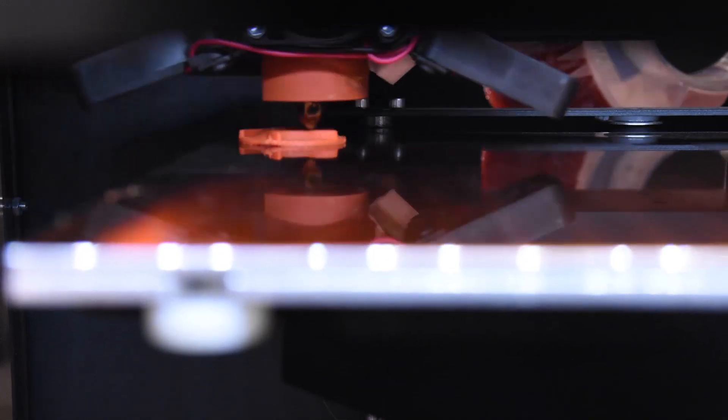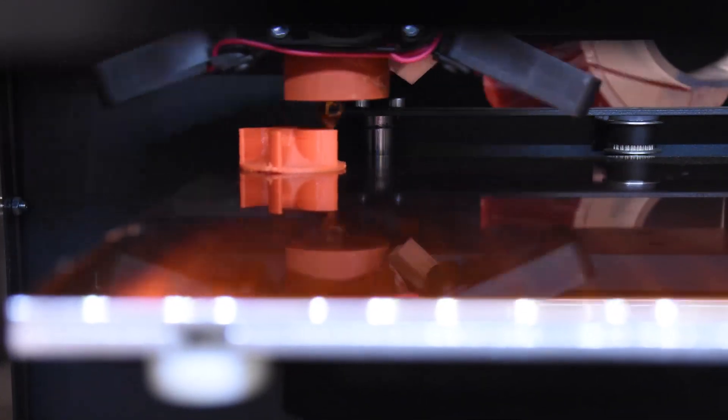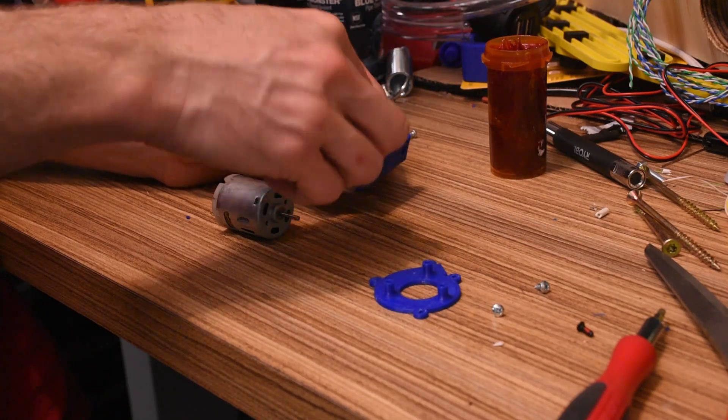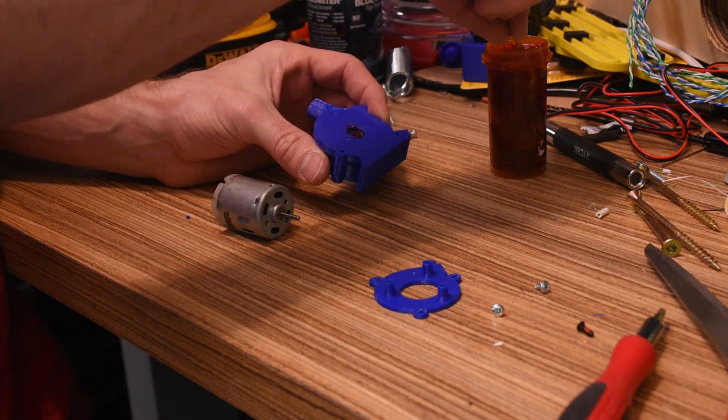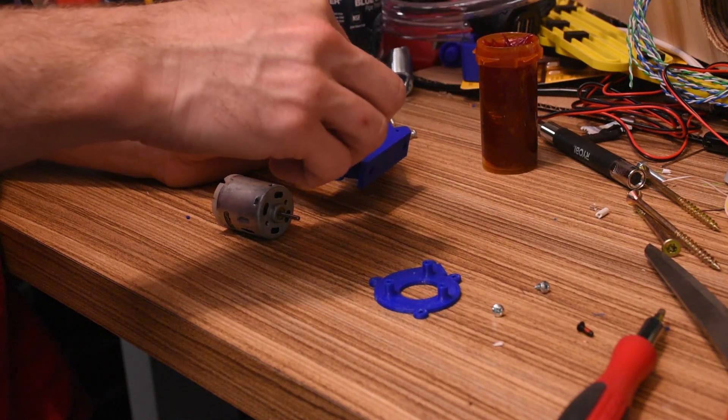I printed all the parts on the CraftBot Plus. I had an old RadioShack 9-18 volt high speed motor that I wanted to use. This motor is really common and it's plenty powerful.